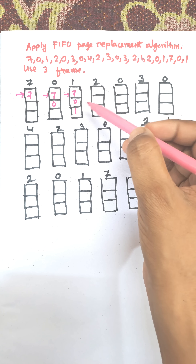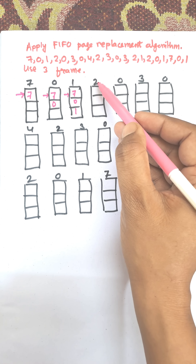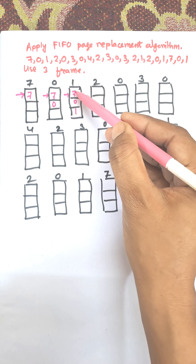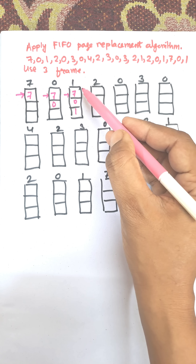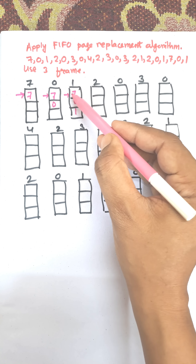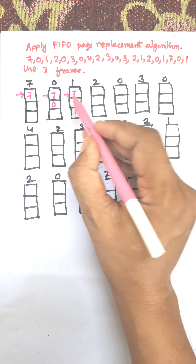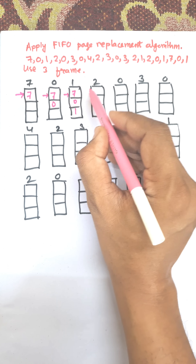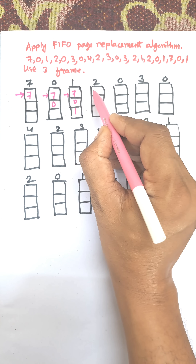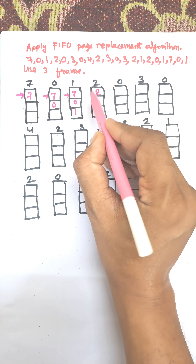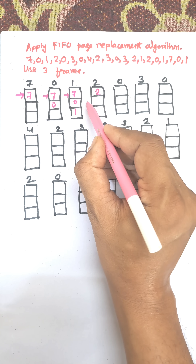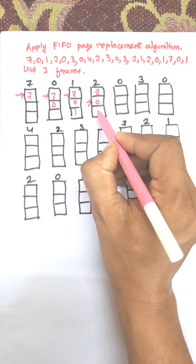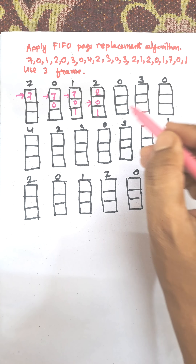Now we need to replace the next page, which is 2. Among 7, 0, 1 in the frames, the first page number inserted was 7, so following first-in first-out, 7 will be replaced by 2. The pointer then shifts to the next position, pointing to 0, which becomes the next replacement target.